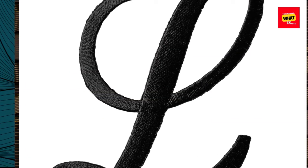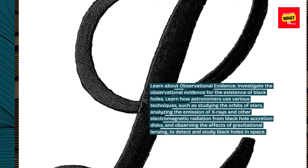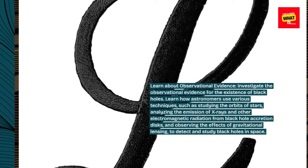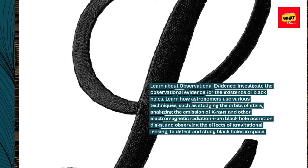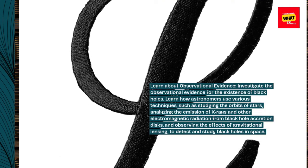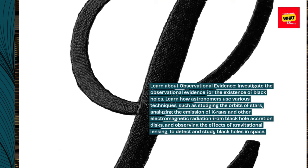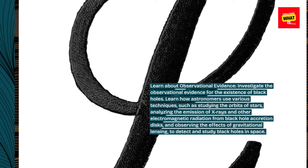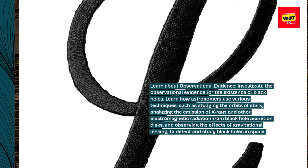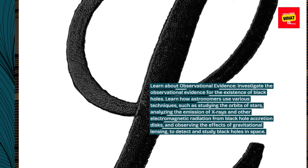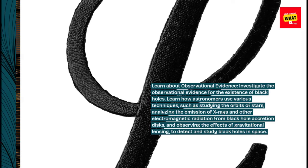Learn about observational evidence. Investigate the observational evidence for the existence of black holes. Learn how astronomers use various techniques, such as studying the orbits of stars, analyzing the emission of X-rays and other electromagnetic radiation from black hole accretion disks, and observing the effects of gravitational lensing, to detect and study black holes in space.